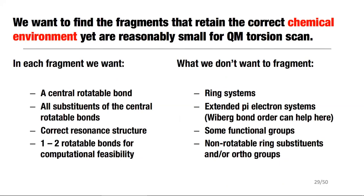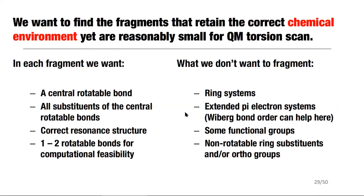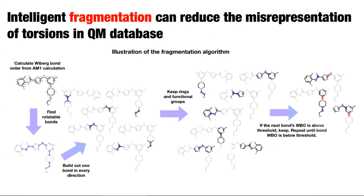The criteria for fragmenting: we want a central rotatable bond, all the substituents right next to it to capture the immediate chemical environment, and the correct resonance structure — meaning the correct bond order or electronics in that bond. We don't want more than one to three rotatable bonds for computational feasibility, we don't want to fragment ring systems or certain functional groups, and we don't want to fragment extended pi-electron systems. The Wiberg bond order can help identify those.